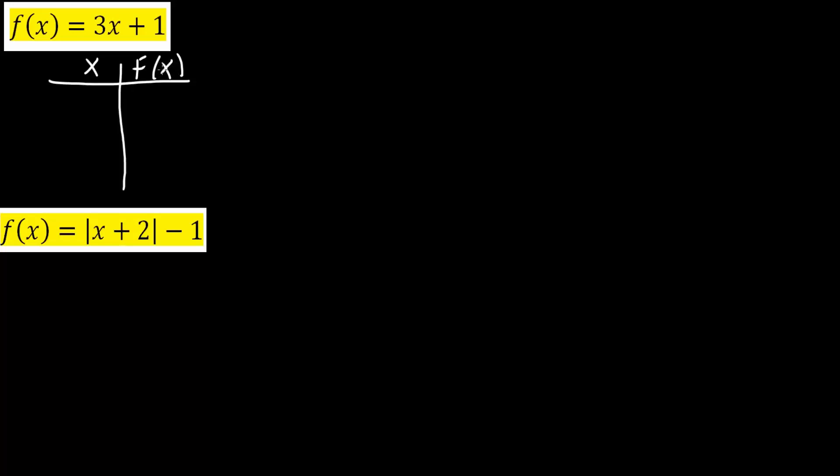We're just mainly going to plug in some points. So if x is negative 1, we plug in negative 1, we get 3 times negative 1 is negative 3, plus 1 would give us negative 2. Then we do 0. I plug in 0, I get 3 times 0 is 0, plus 1 would give us 1. Finally, I do 1. I would get 3 times 1 is 3, 3 plus 1 is 4.